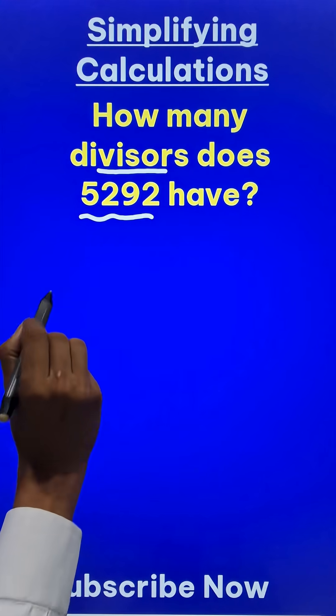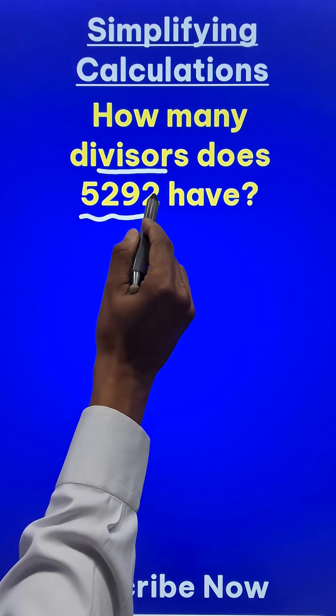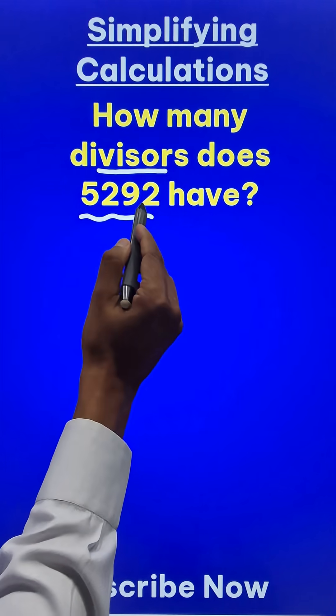Now, if you see this number 5292, it is an even number and so it is divisible by 2.